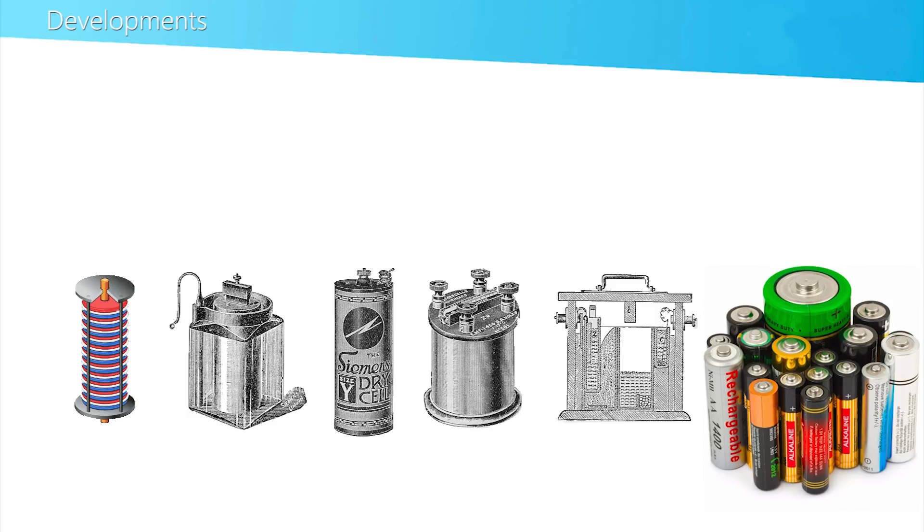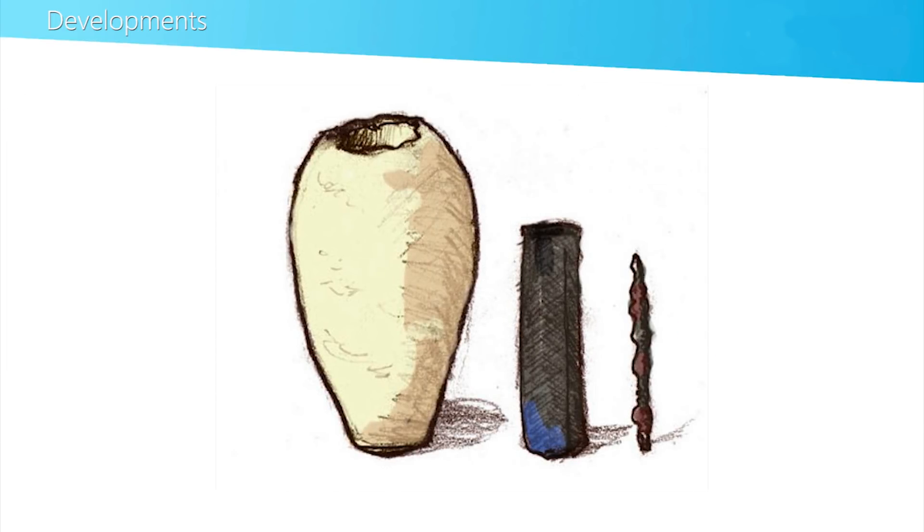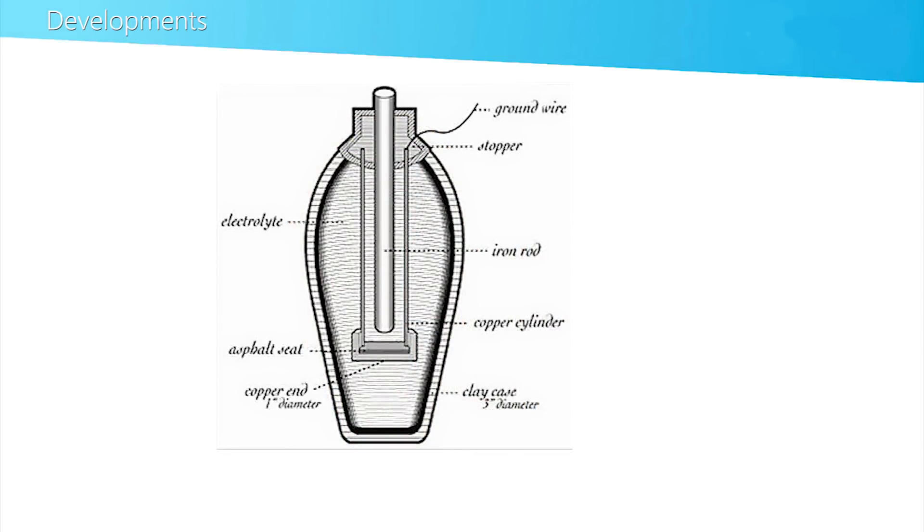But this work could have almost started 2000 years before. In 1936 evidence of this clay device with dissimilar metals that were thought to hold vinegar was discovered near Baghdad. It is a battery cell.